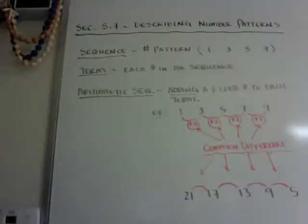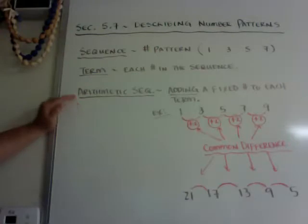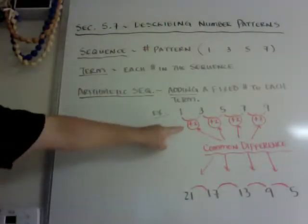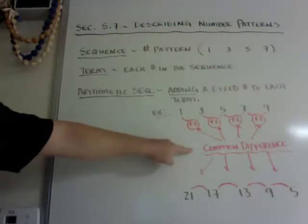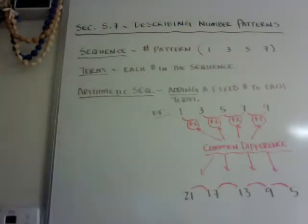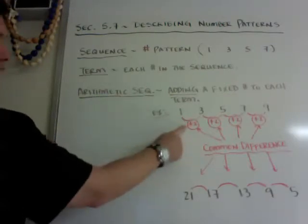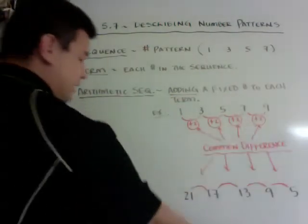As a side note, geometric sequence is when you multiply numbers to get there, but this book doesn't use geometric, it only uses arithmetic. So arithmetic sequence is when you add a fixed number. That fixed number is called a common difference. Whether it's positive or negative, that's the common difference. So in this case, plus 2 or positive 2 is your common difference.